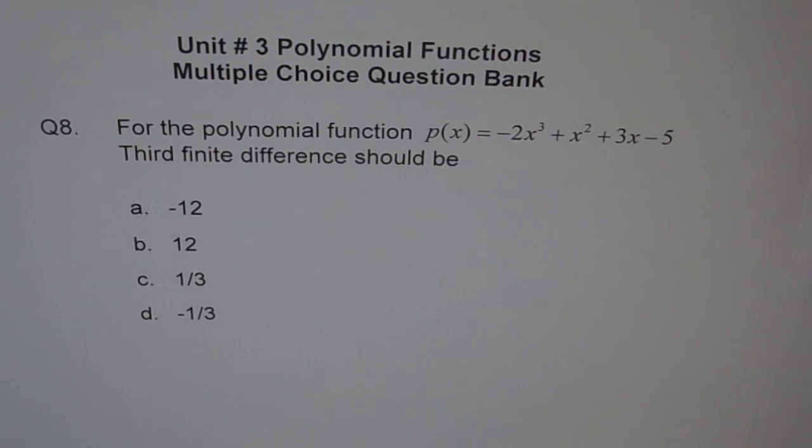For the polynomial function p(x) equals -2x³ + x² + 3x - 5, third finite difference should be how much?